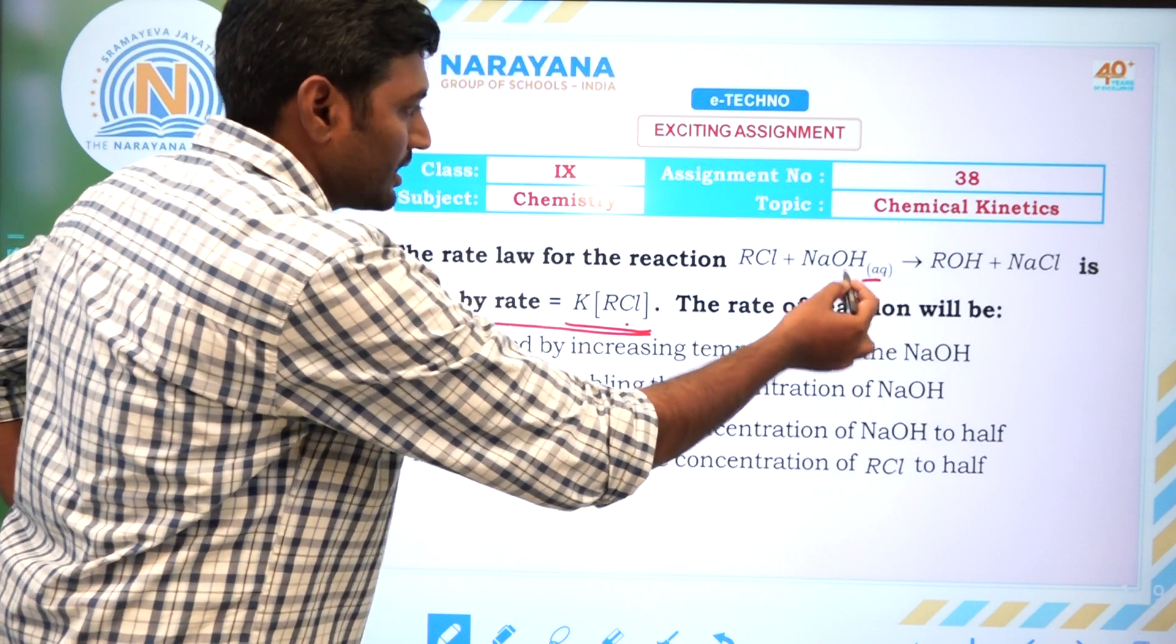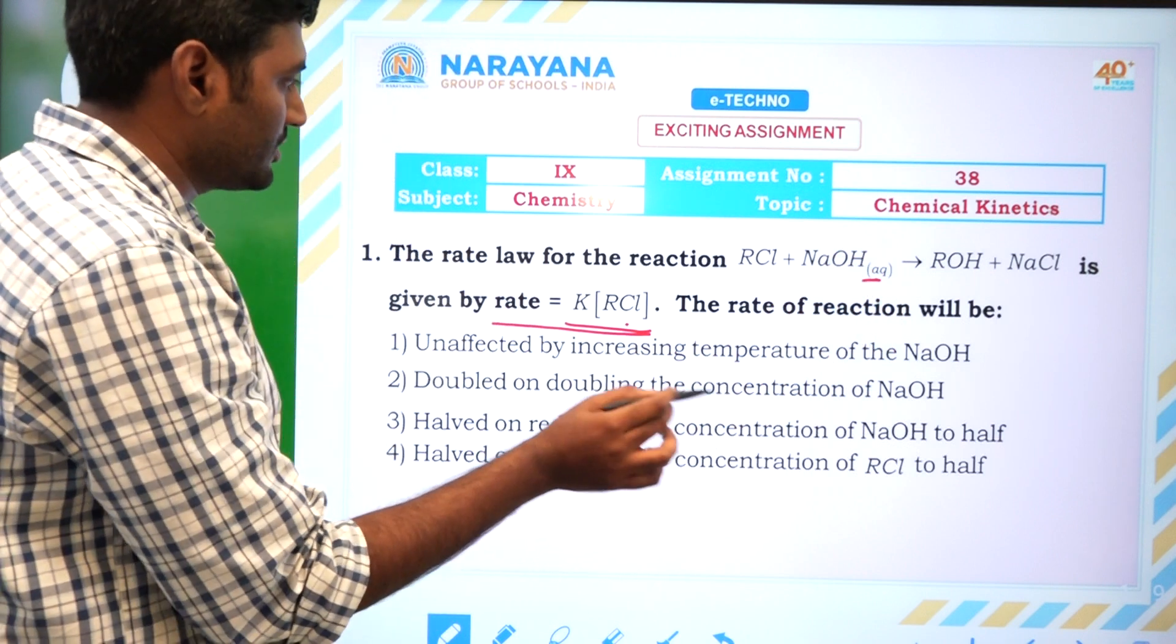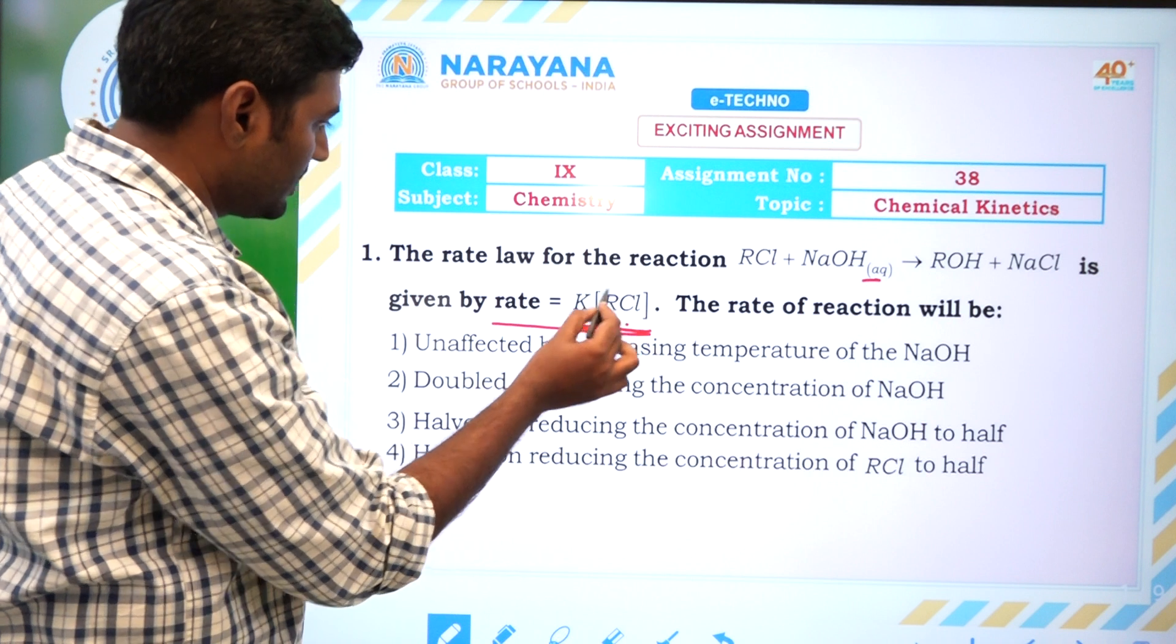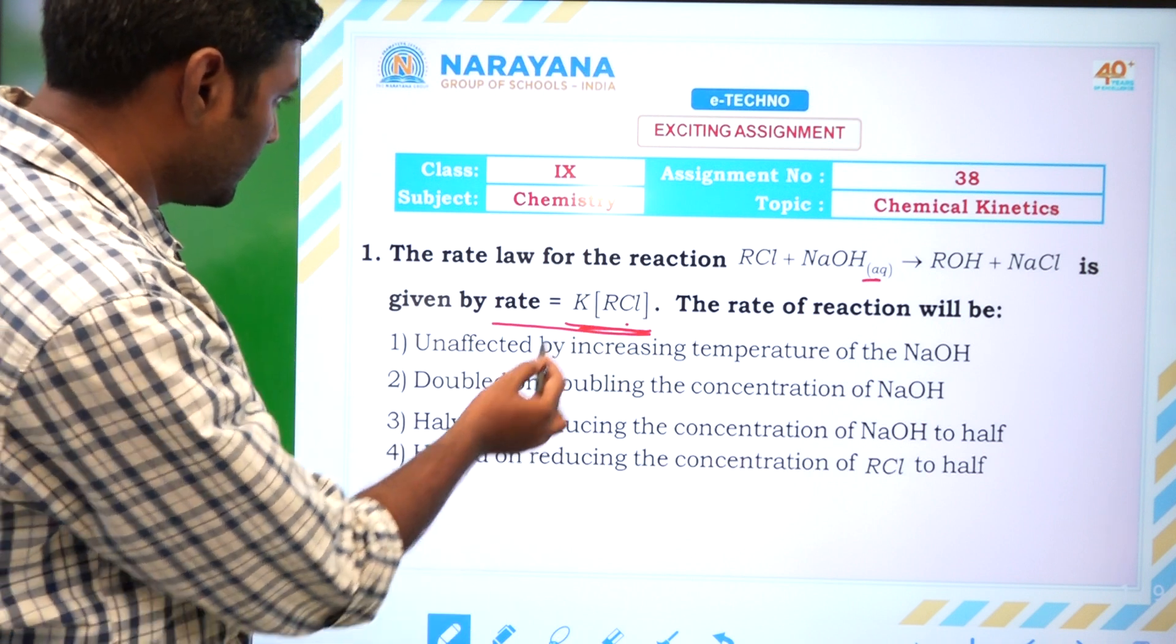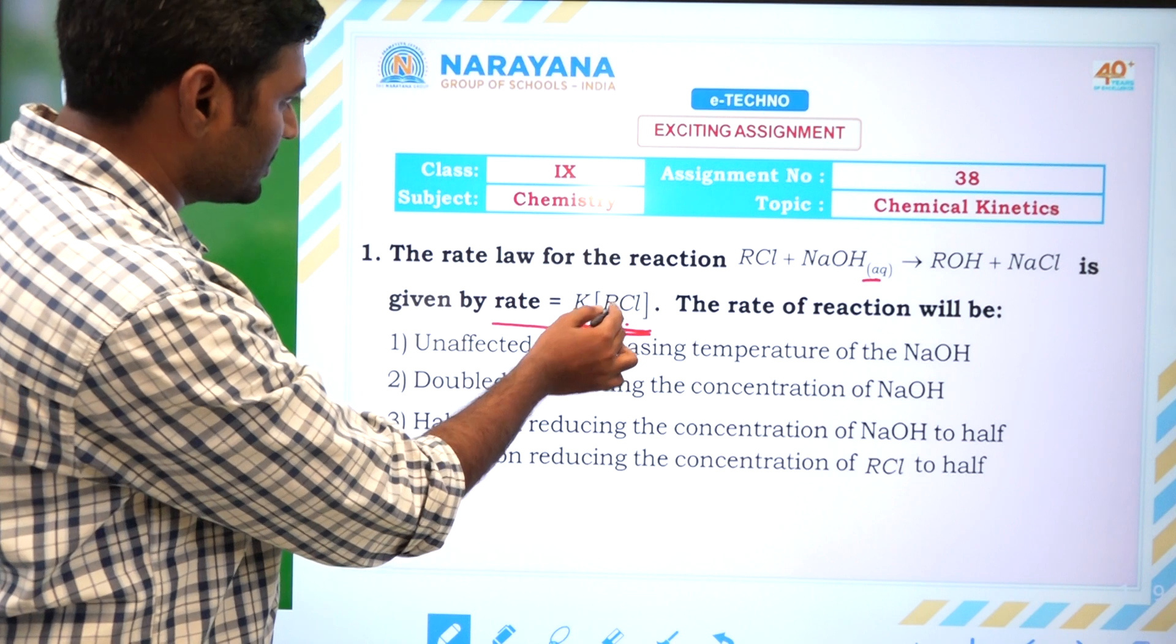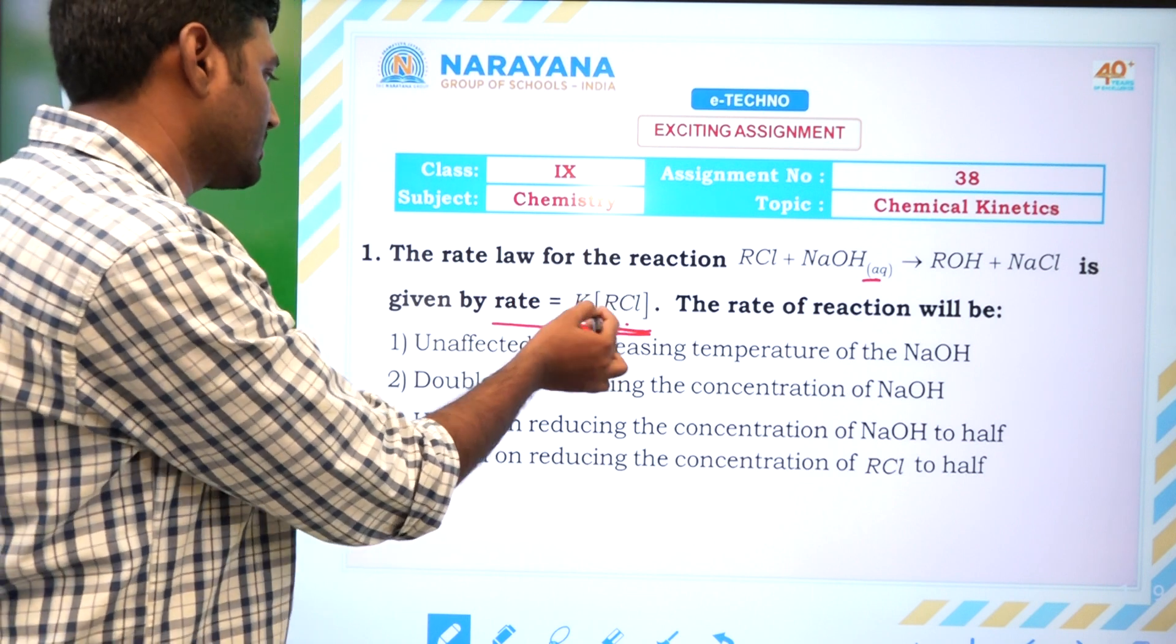NaOH is in a large amount of excess, hence the rate of the reaction depends upon only RCl. If you see the options, the rate of the reaction depends on these. If you change the concentration, the rate of the reaction changes accordingly.